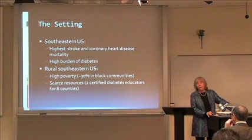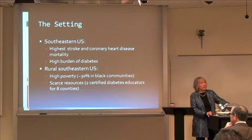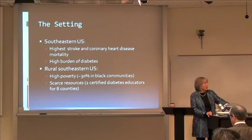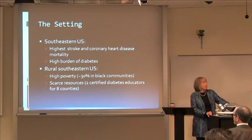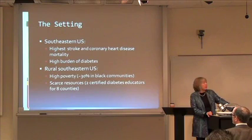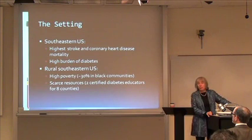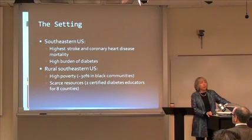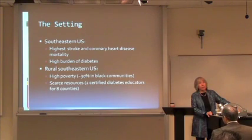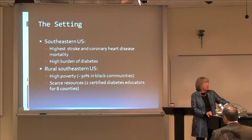Let's start off with the setting. The southeastern United States is not very good for your health. It has the highest stroke and coronary heart disease mortality in the country, the highest burden of diabetes, the highest burden of obesity. These problems come into sharper focus in the rural areas. Most of you know that rural populations are part of the AHRQ disparities report as a specific vulnerable population, and the reasons for that are very clear.